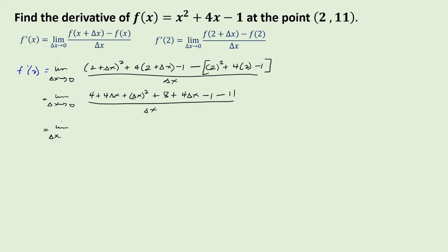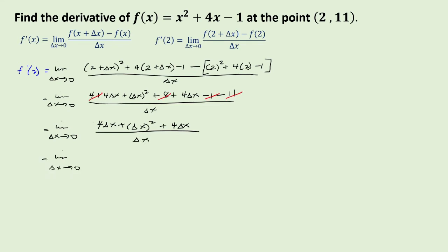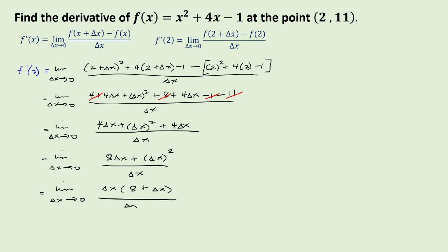This is the limit as delta x approaches 0. Simplifying the numerator: 4 plus 8 minus 1 minus 11 equals 0, so what remains in the numerator is 4 delta x plus delta x squared plus 4 delta x over delta x. Combining gives 8 delta x plus delta x squared over delta x. Factoring out delta x from the numerator, we have delta x times (8 plus delta x) over delta x, and we can cancel delta x.